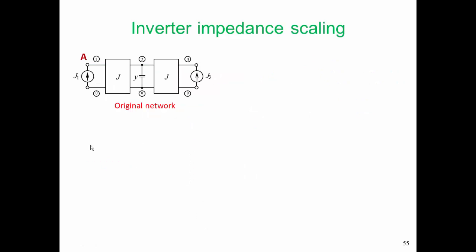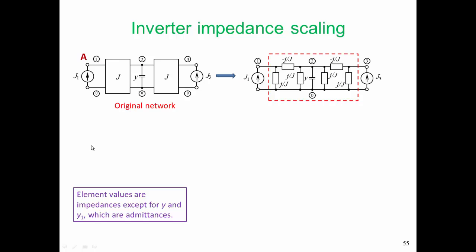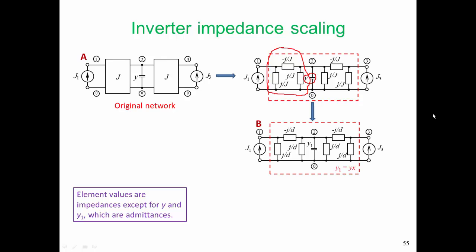Here is our original network, our A network. We're going to take those inverters and realize them using lumped elements. So those admittance inverters J's are going to be realized by three lumped elements each. So that's the first admittance inverter. And these values are impedances, and Y is just our central admittance.